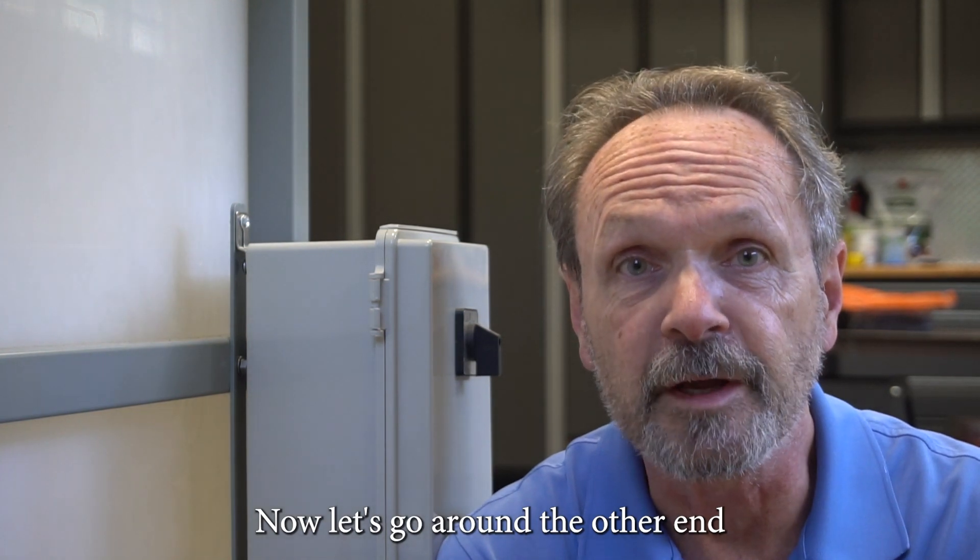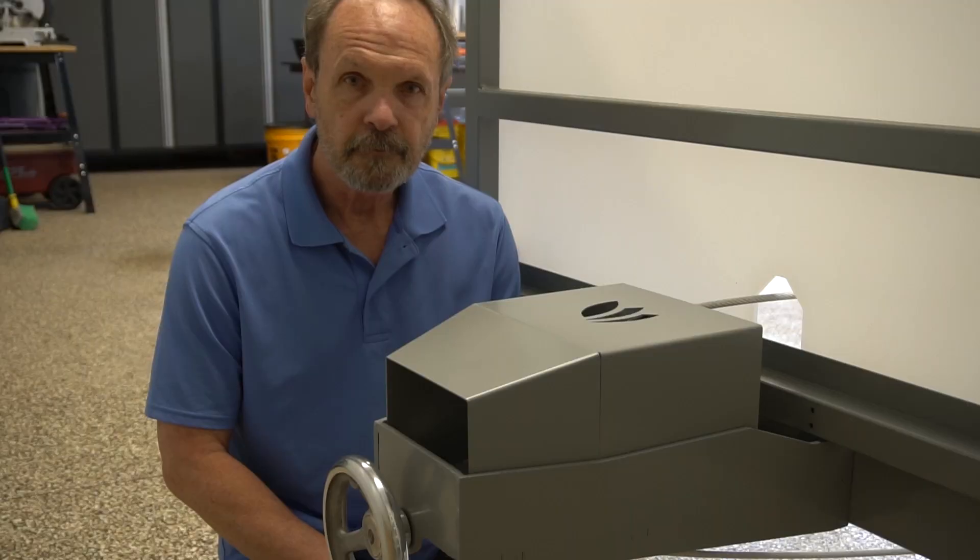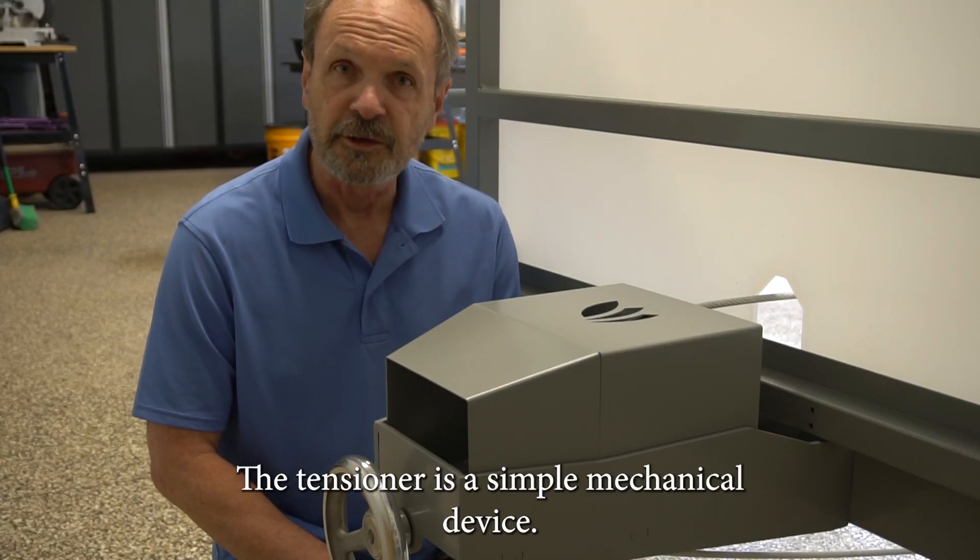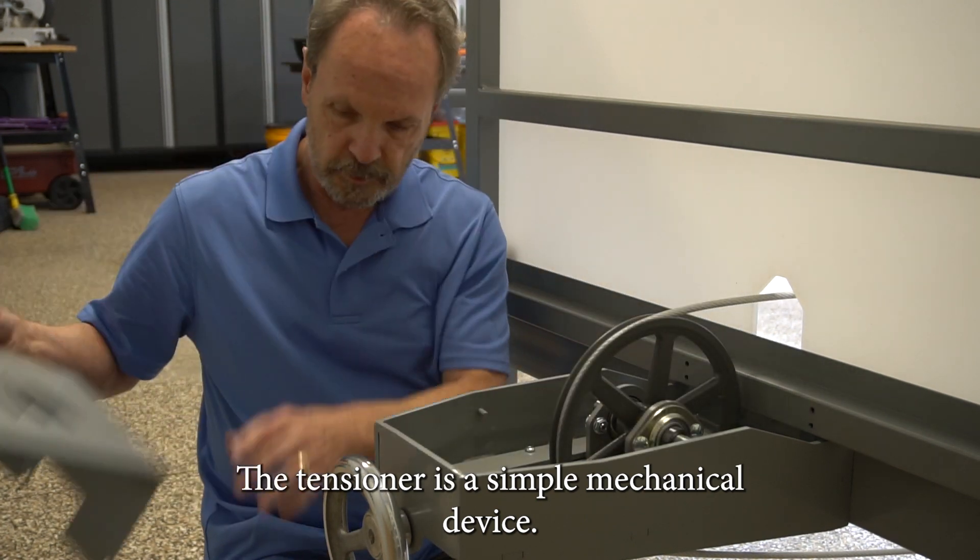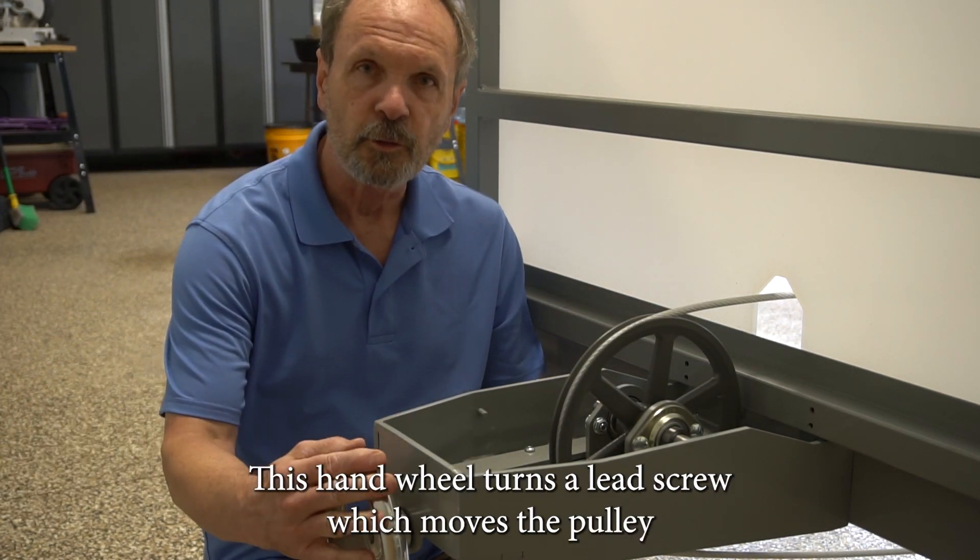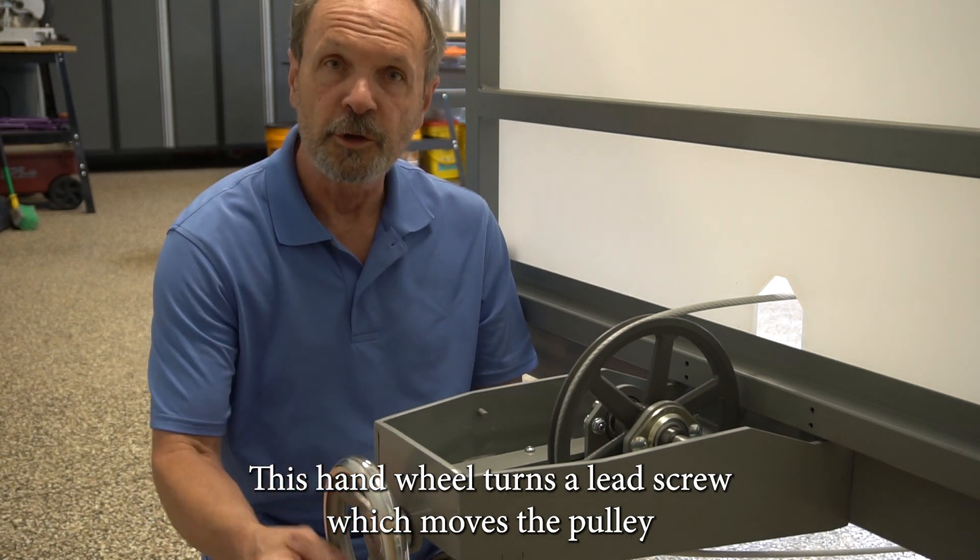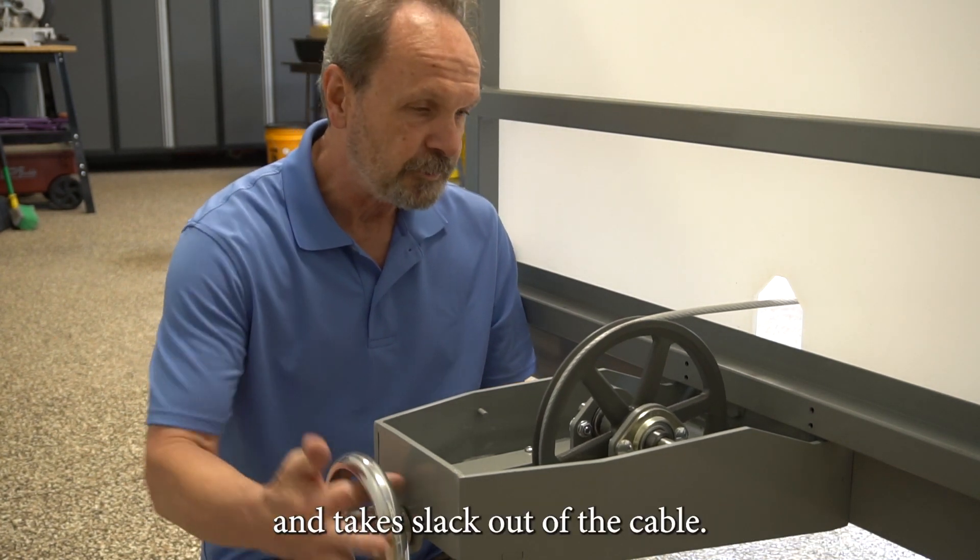So now let's go around the other end and take a look at the tensioner. The tensioner is a simple all-mechanical device. This hand wheel turns a lead screw which moves the pulley and takes slack out of the cable.